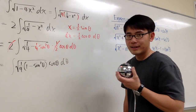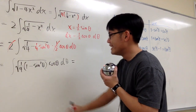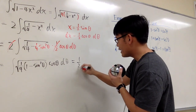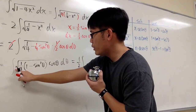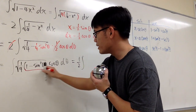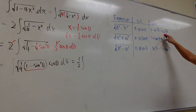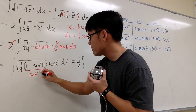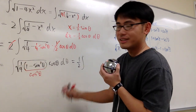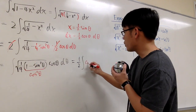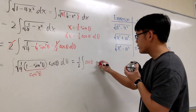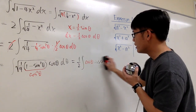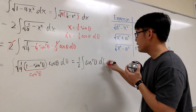Square root of 1/4 is 1/2, so we can take that outside: this becomes (1/2) times the integral of the square root of 1 minus sin²θ, times cosθ dθ. Now, 1 minus sin²θ equals cos²θ by the Pythagorean identity. So the square root of cos²θ is cosθ, giving us cosθ times cosθ dθ — altogether, cos²θ dθ.